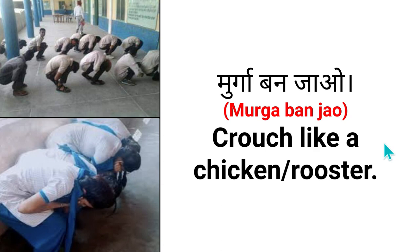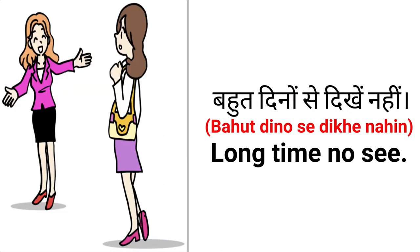Now let's move on to the second sentence: Bohut dinon se dikhe nahi — dikhaai nahi diye, ya phir mile nahi. If someone is meeting you after a long time, or you haven't seen them in a long time, then you would say to them...